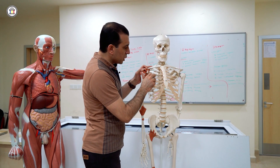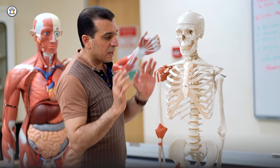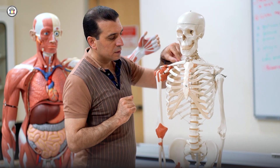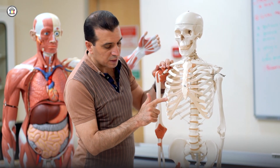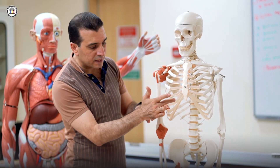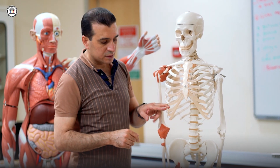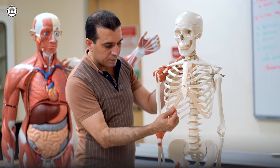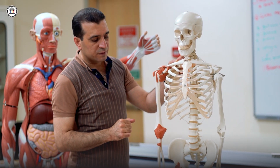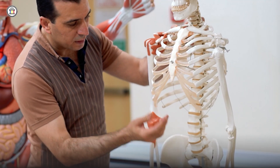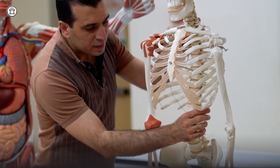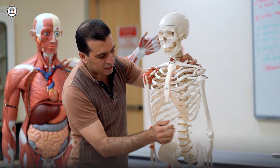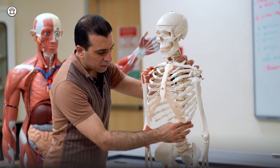As we discussed before, the ribs are divided into three groups: true ribs, false ribs, and floating ribs. The true ribs are the upper seven pairs — numbers one through seven — directly attached to the sternum through the costal cartilage. Numbers eight, nine, and ten are called false ribs because they attach to each other and then through one costal cartilage to the seventh rib. Lastly, the floating ribs are numbers eleven and twelve; they are only attached posteriorly to the thoracic vertebrae and have no anterior attachment.